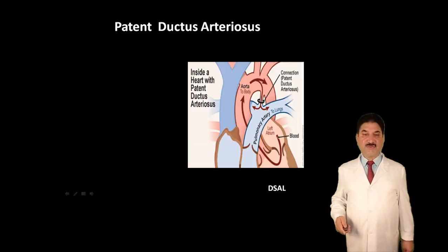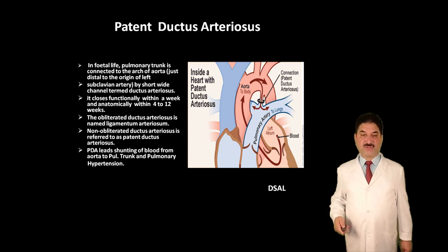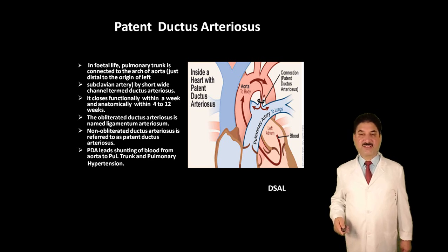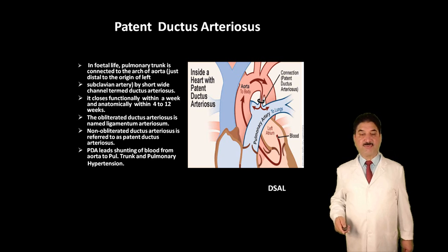What is patent ductus arteriosus? In fetal life, the pulmonary trunk is connected to the arch of aorta just distal to the origin of the left subclavian artery by a short wide channel termed the ductus arteriosus. It closes functionally within a week and anatomically within four to twelve weeks after birth. The obliterated ductus arteriosus is named the ligamentum arteriosum, which is related to the left recurrent laryngeal nerve. Non-obliteration of the ductus arteriosus is referred to as patent ductus arteriosus (PDA), which leads to shunting of blood from the aorta to the pulmonary trunk and causes pulmonary hypertension.